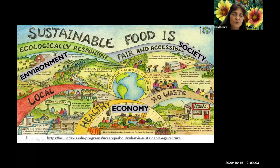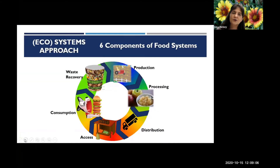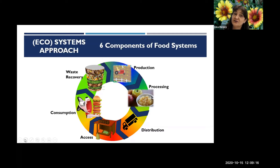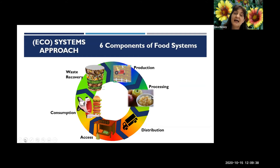Here are the six broad components of food systems. They're all interconnected and interdependent, but for simplicity I'll start with production, then go to processing, distribution, food access, consumption, and then waste recovery. If that waste is recovered correctly, we can use it as compost to start production all over again.